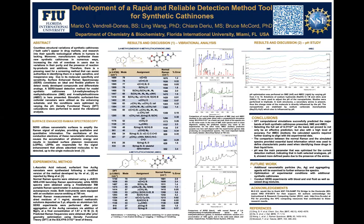In conclusion, for both analytes we were able to assign the major peaks with a high level of confidence and accuracy. Scaling was required since DFT is a calculation that does not take into consideration real conditions. For both compounds, pH 8 was the best pH range in which the peaks were less broadened and more sharp.